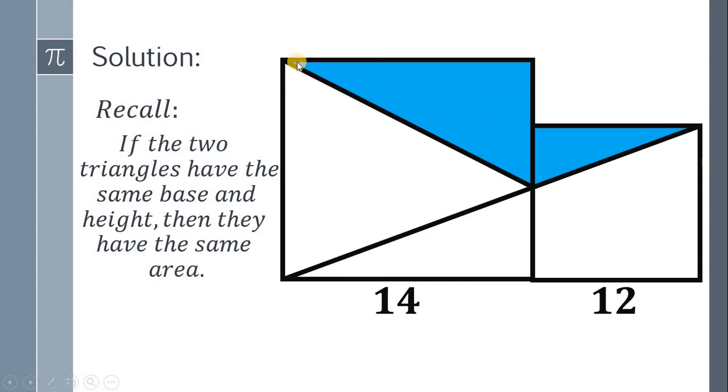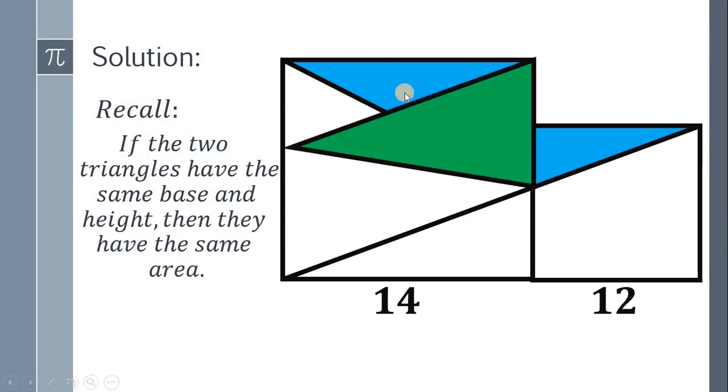Now, notice this big blue right triangle. Notice that if I create a new triangle like this, they have the same area. So the blue triangle has the same area as the green triangle. It follows that as long as the vertex of this triangle is on this side of the square, they have the same area.